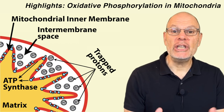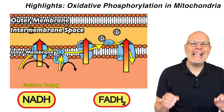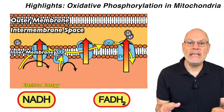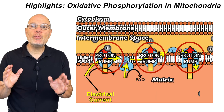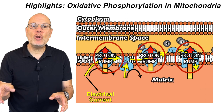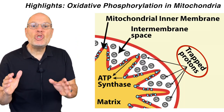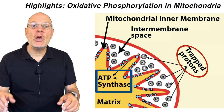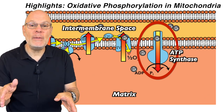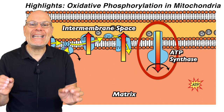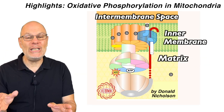Here are the highlights of ATP creation in the mitochondria. Along the inner mitochondrial membrane, electron energy supplied by NADH and FADH2 is used to create an electrical current. That current powers proton pumps that pump protons from the mitochondrial matrix to the intermembrane space. These trapped protons can only exit that space through the ATP synthase channel. As these protons diffuse through the ATP synthase channel, their kinetic energy is used to power the enzymatic creation of ATP from ADP and phosphate.